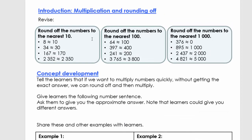So let's look at what we're going to do today. We're going to revise rounding off numbers to the nearest 10, to the nearest hundred, and to the nearest thousand. When rounding to the nearest 10, we only look at the 10s and the units. For example, 8 is between 0 and 10, and according to the rounding off rules, anything higher than 5 goes to 10. So 8 rounded off to the nearest 10 is 10.